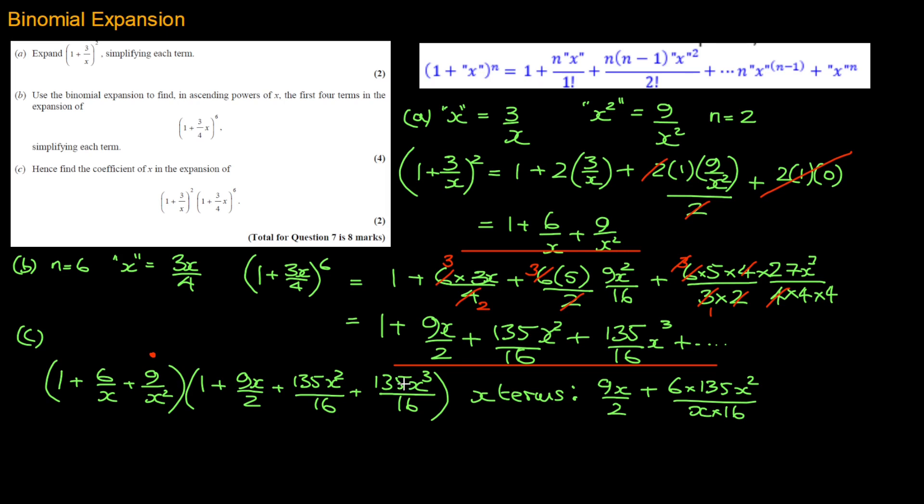And this will generate one of our terms. And this is going to generate 9 times 135. So we've got two options now.